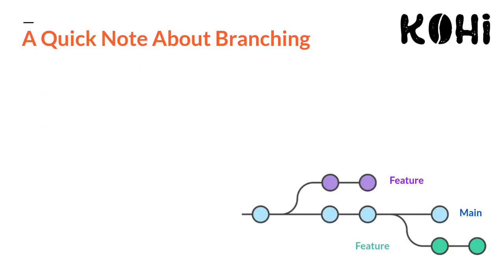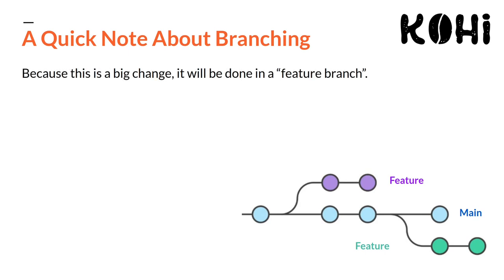I want to talk about branching real quick, because this is something that will come up over and over again, and this is the first time we have a really large feature to implement. We need to talk about branching in terms of Git. Because this is a big change, we're going to do this in something called a feature branch. Anytime you're working on a somewhat large codebase, especially when other people are relying on it, you generally don't want to implement something that's halfway done and is a breaking change where the application won't run.